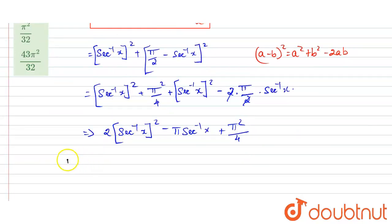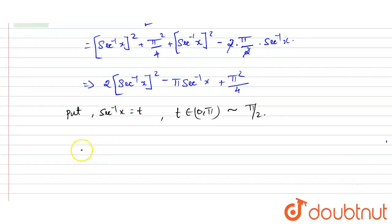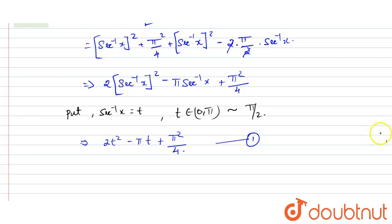Now let sec⁻¹x = t, where t belongs to [0, π] but not π/2. Substituting, the equation becomes: y = 2t² − πt + π²/4. This is equation number one.